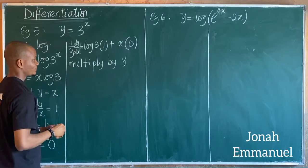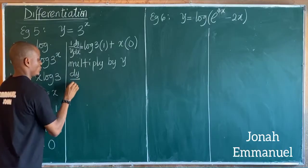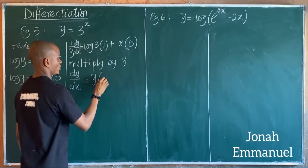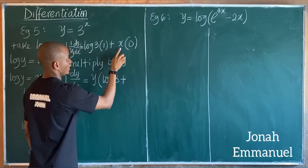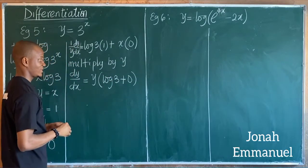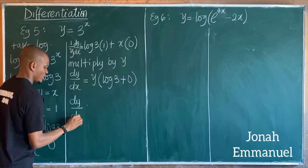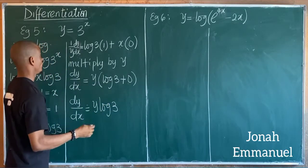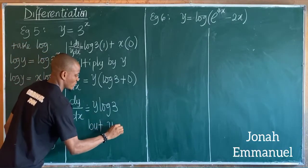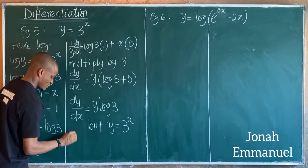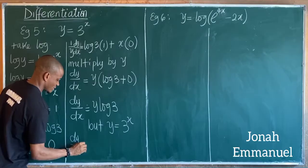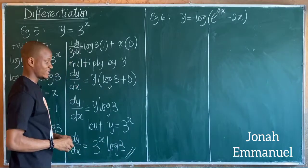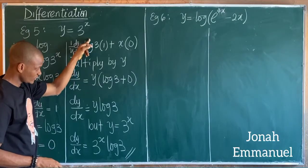Multiplying both sides by y gives dy/dx equal to y log 3. Since y equals 3 to the power x, we substitute back to get dy/dx equal to 3^x times log 3. That is the final answer for this example.